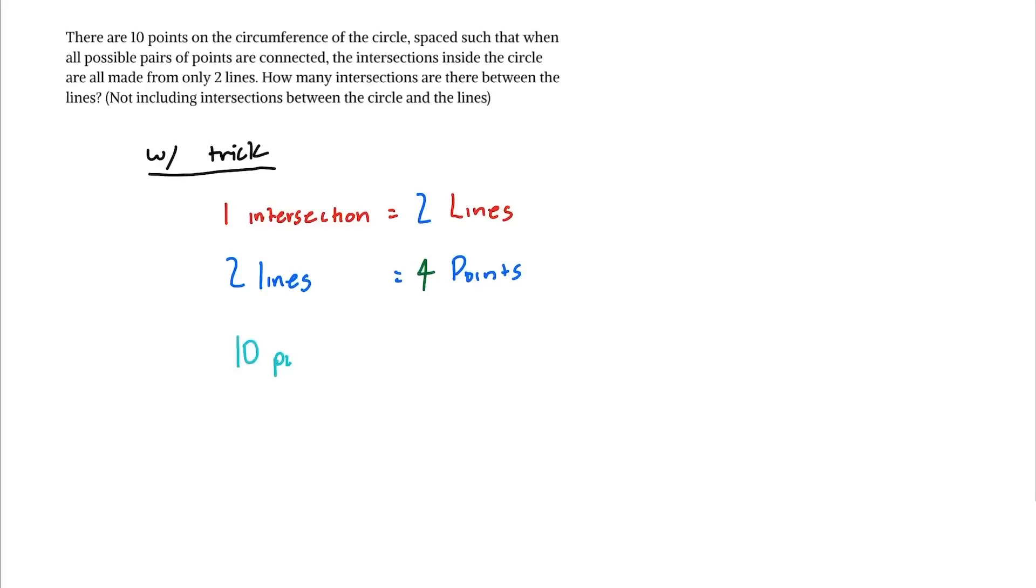So we have our 10 points in total and we need to choose four of the points to form an intersection.